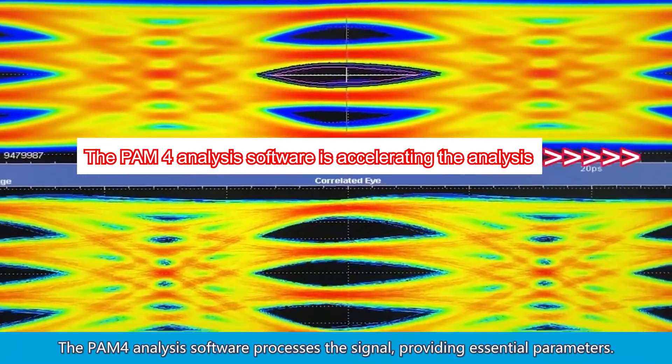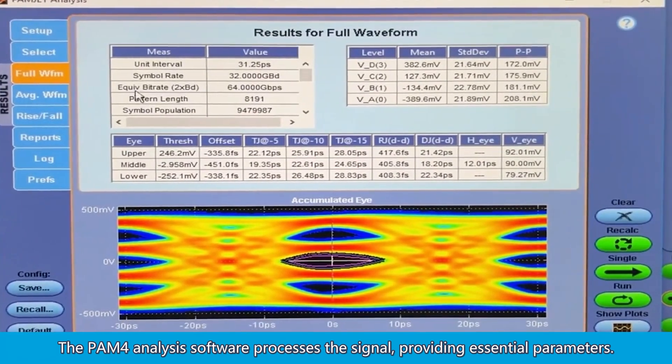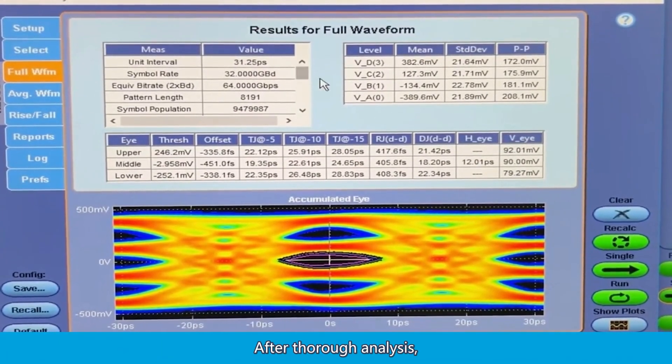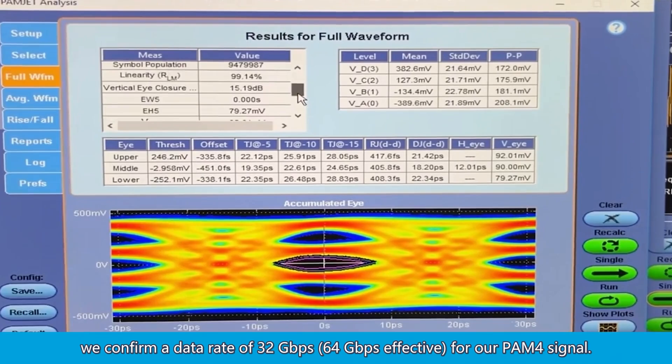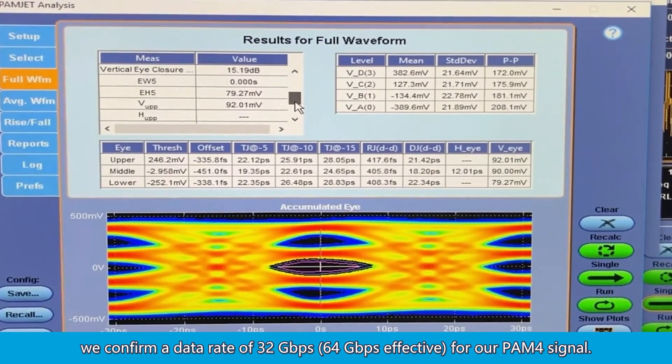The PAM-4 analysis software processes the signal, providing essential parameters. After thorough analysis, we confirm a data rate of 32 gigabits per second, 64 gigabits per second effective.